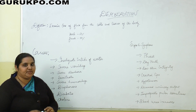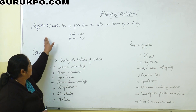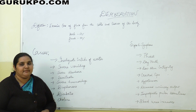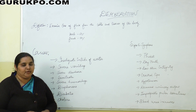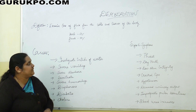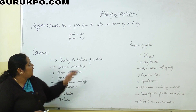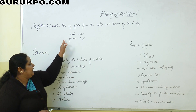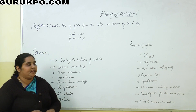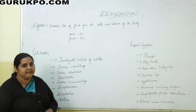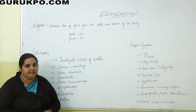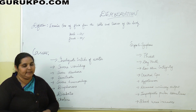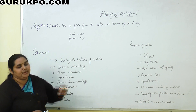Dehydration is defined as excessive loss of fluid from the cells and tissues of the body. The human body comprises water — the male consists of 60% water and the female consists of 50% water. When a person feels thirst they drink water, and when this need is not adequately met, the person goes into dehydration.